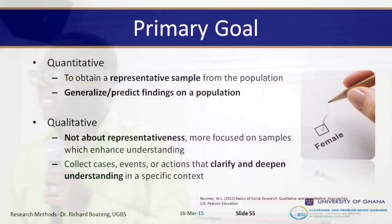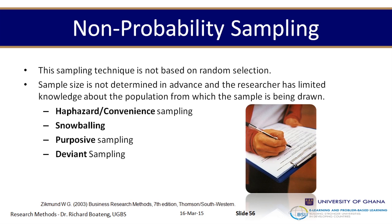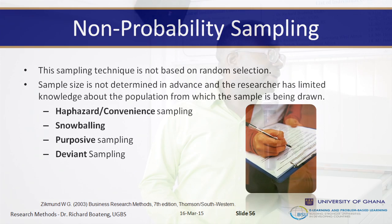Non-probability sampling is what we'll start with, as it is primarily important to qualitative researchers. This technique is based on a non-random selection approach — you cannot just randomize. In qualitative research you could use observation; if I get a clip from media with a politician's statement and want to use it for analysis, I need to state the source and understand the rights involved.